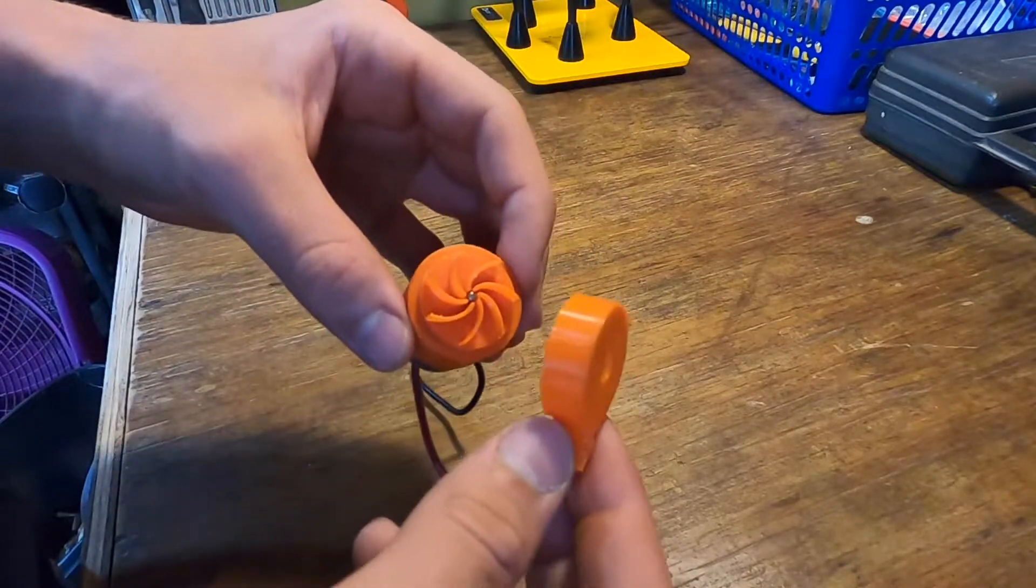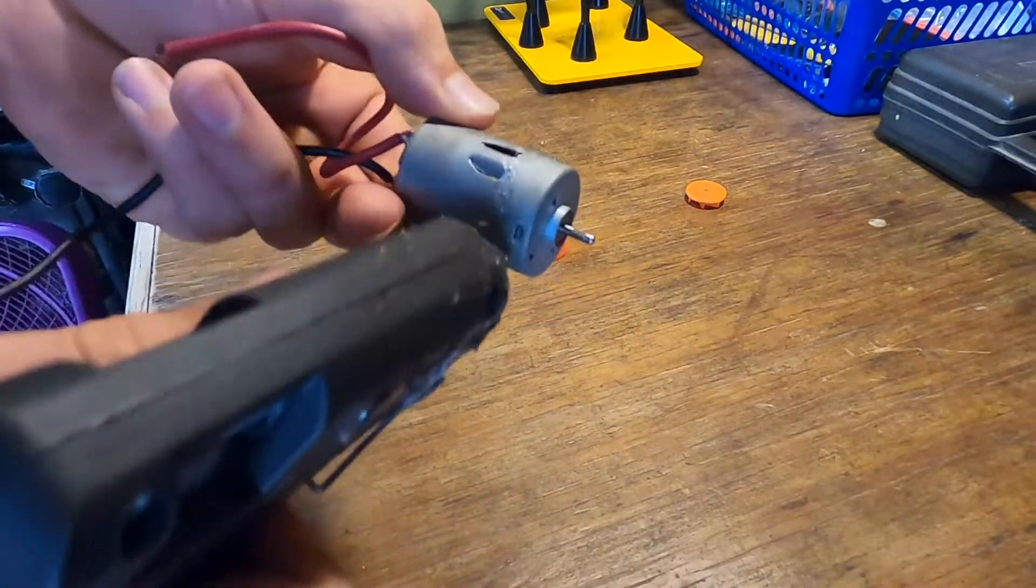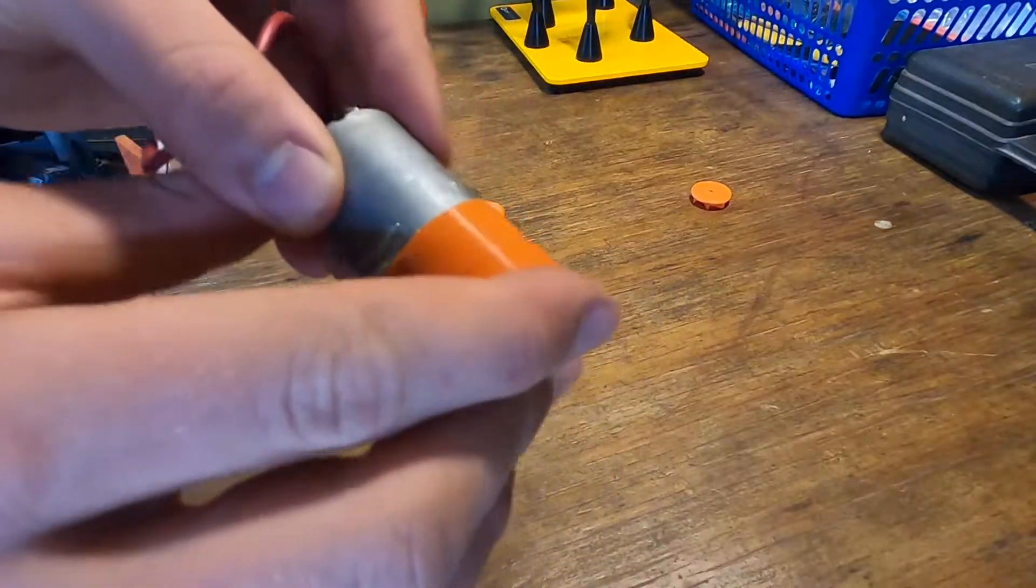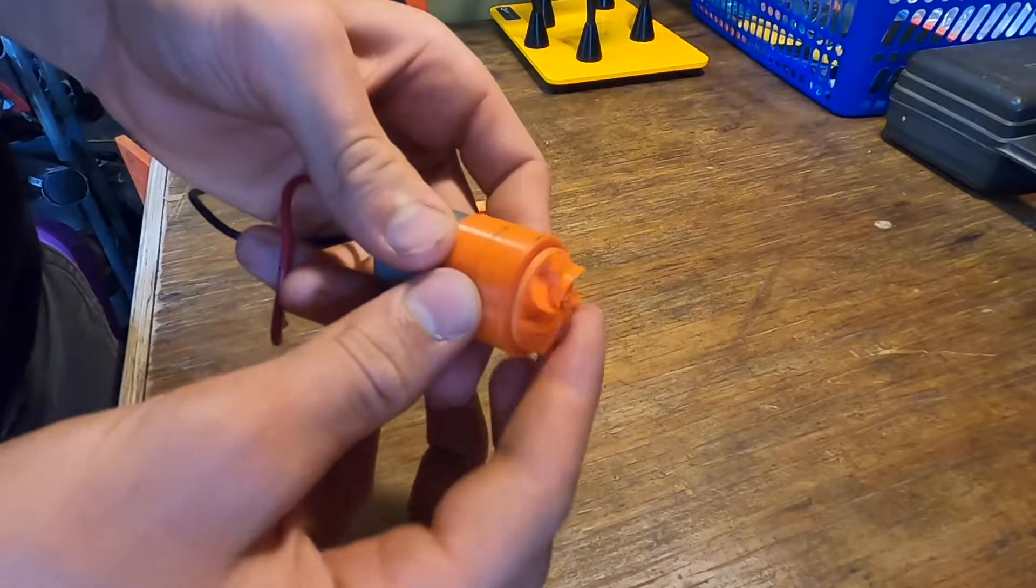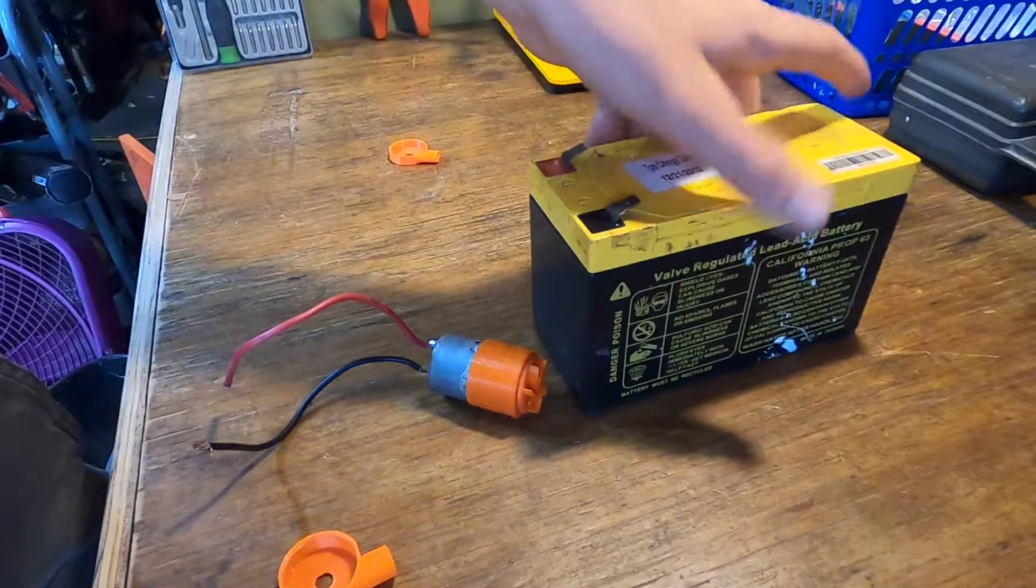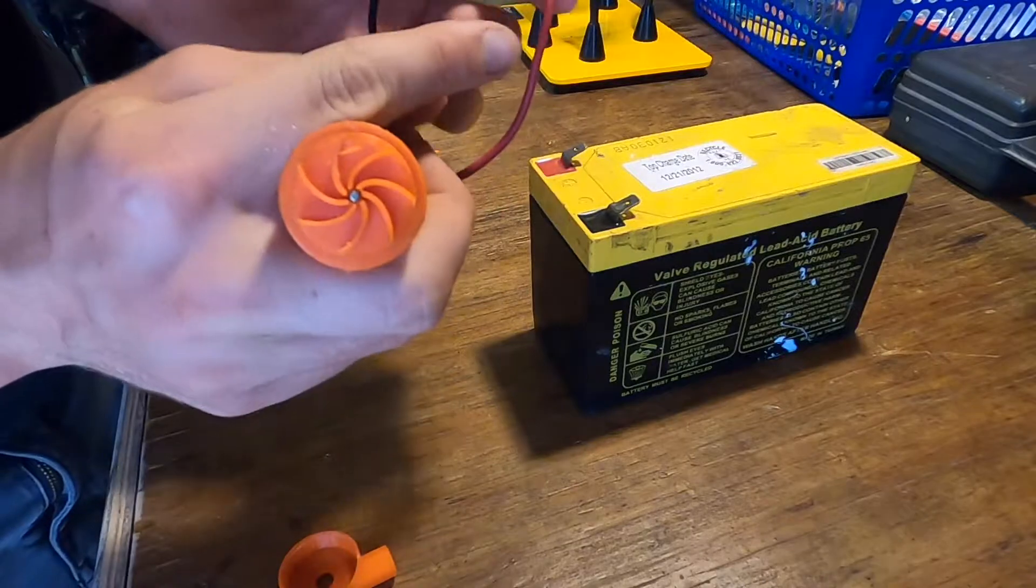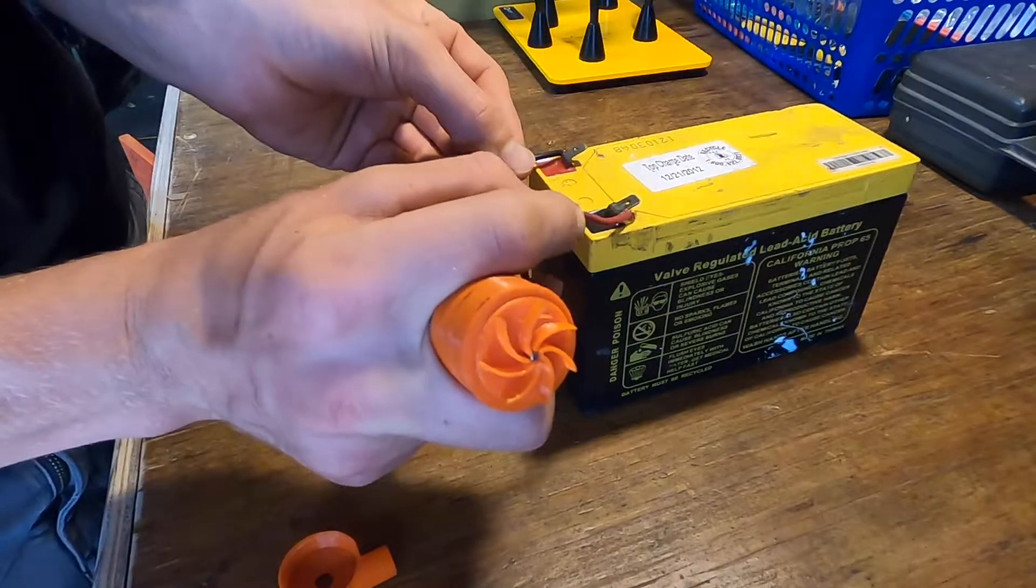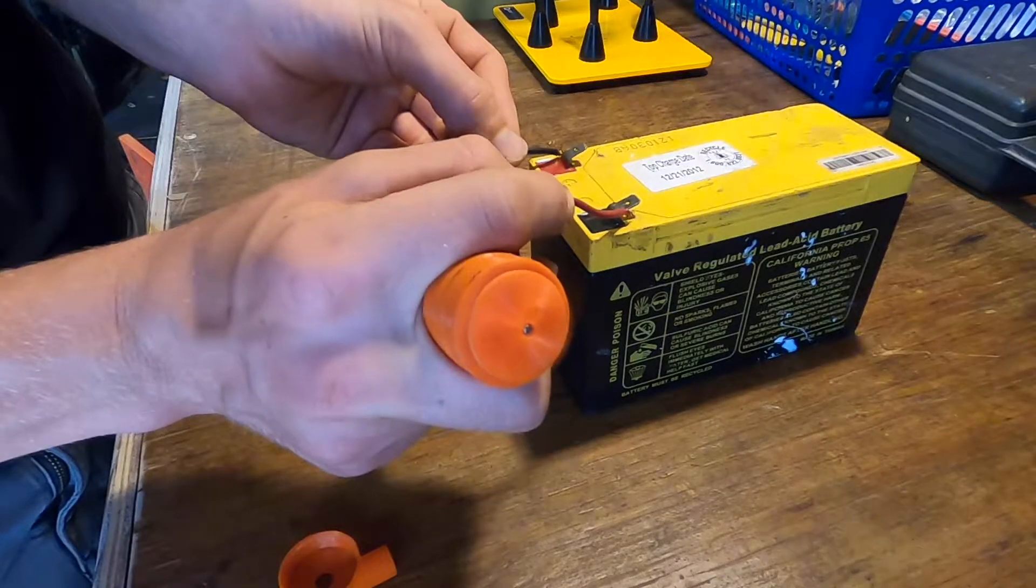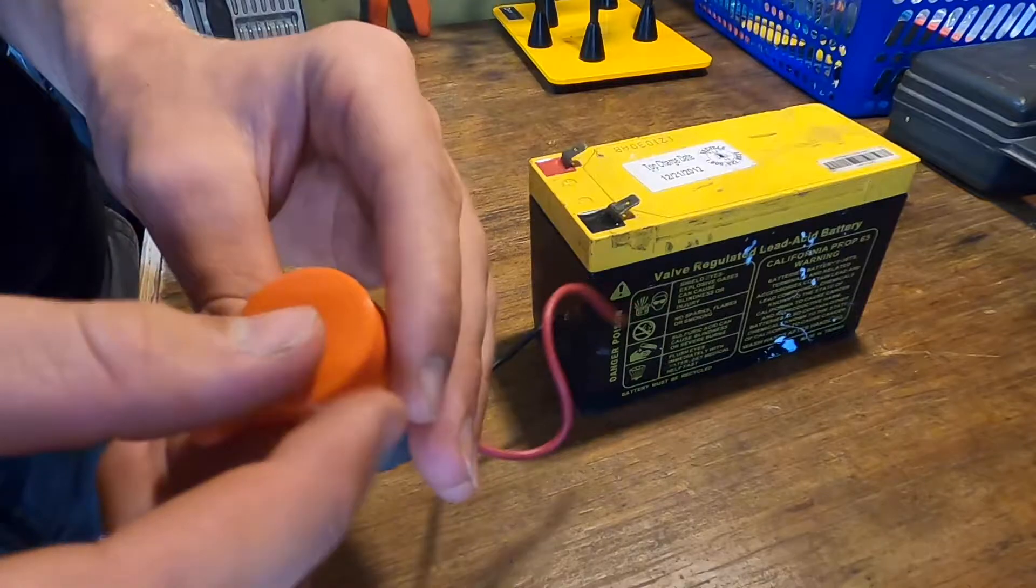Here is my 12 volt battery. I'm going to make sure that the impeller isn't rubbing on the back of the motor. Looks good. And then I'm going to put a little bit of glue on this outer housing here.